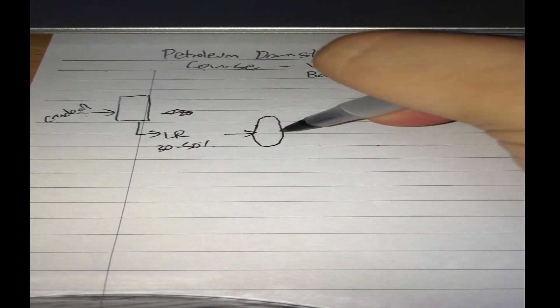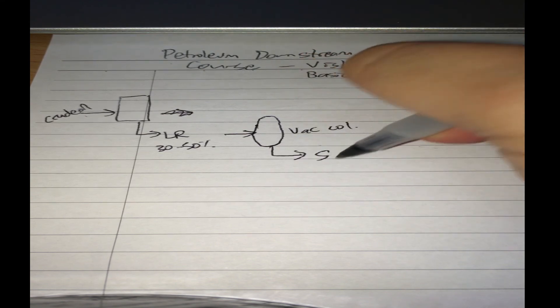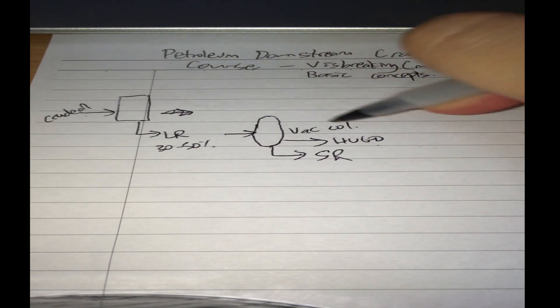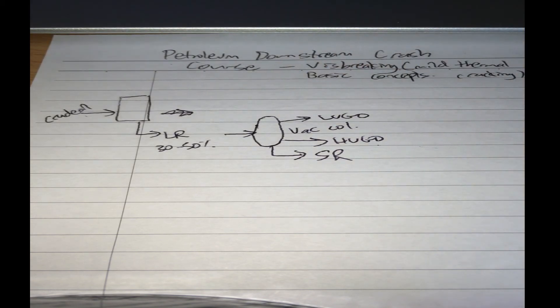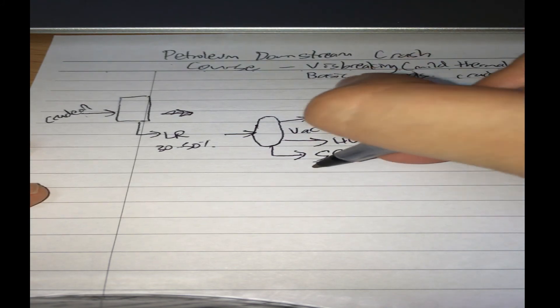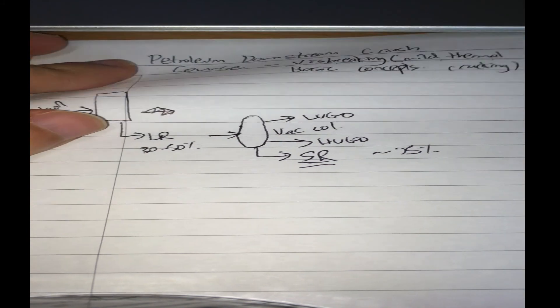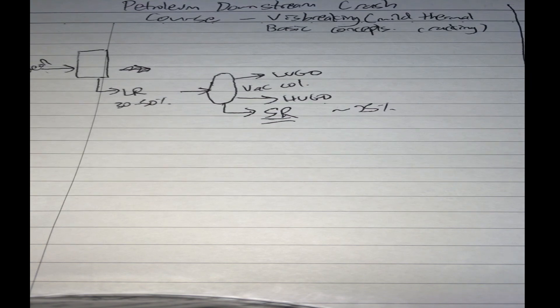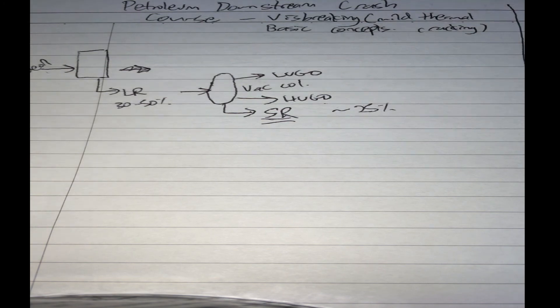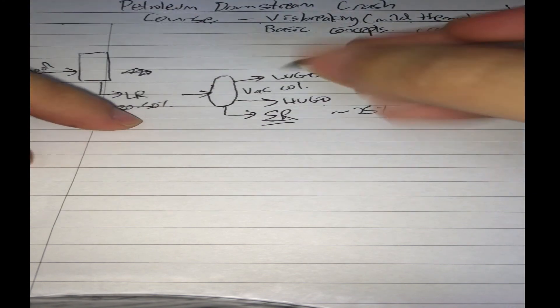We can extract short residue, heavy vacuum gas oil, and light vacuum gas oil from this tower. Short residue can be 25% for heavy crudes - very heavy crudes will have about 24 to 25% short residue. And that's still a lot of money. What can you do with it? Because you obviously can't put it in a car, this is as good as asphalt.